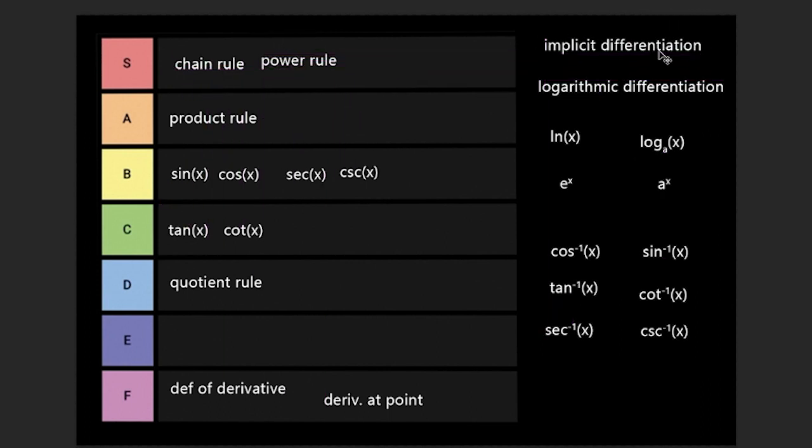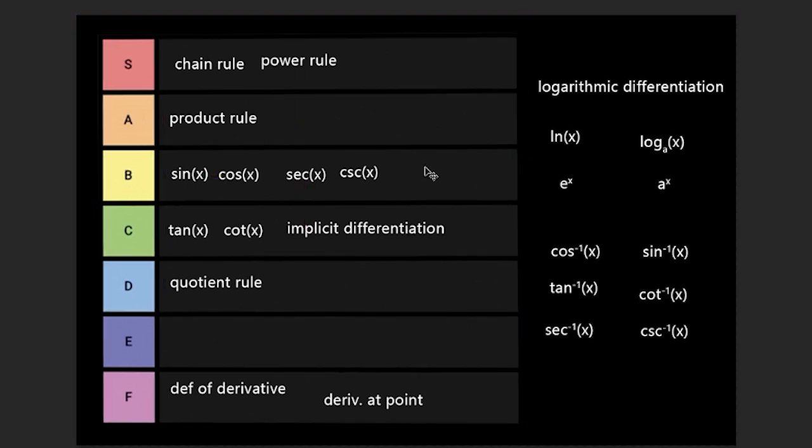Next up is implicit differentiation. Now implicit differentiation is used when there's an x and a y. When you have a derivative with a term of y, you have to multiply the derivative by dy dx and solve for that. And I would put this in the B tier, but I'm putting it in the C tier because if you do the second derivative, you have to do a ton of substitution and that becomes a complete nightmare. And you even have to plug in the original derivative into the second derivative.